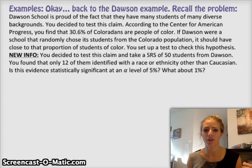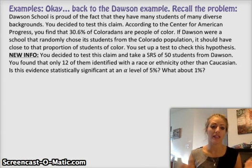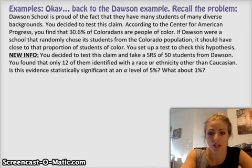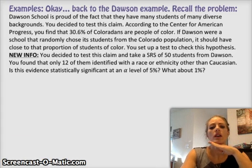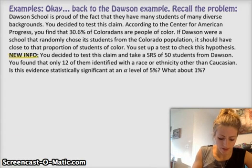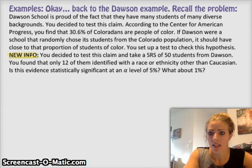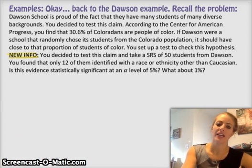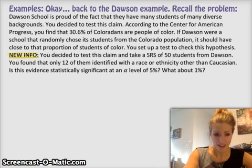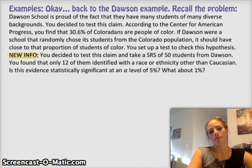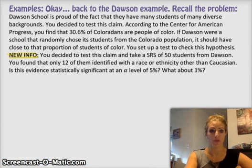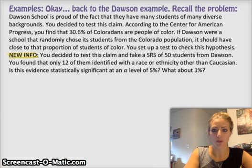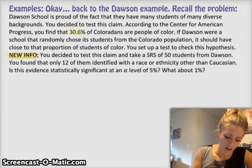We're going back to the Dawson example. We want to test if the true proportion of people of color at Dawson is similar to that of Colorado, which is 30.6%. You got some new info here, because you decided to take a random sample of 50 students at Dawson, and you find out that 12 of them identified with a race or ethnicity other than Caucasian.